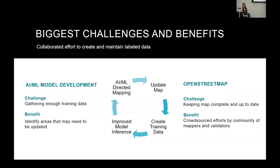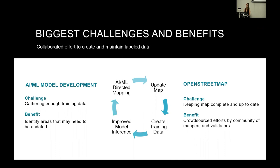One of the biggest challenges to developing an AI/ML model is gathering enough training data, and one of the biggest challenges for OpenStreetMap is keeping the map complete and up to date. There's a shared interest in creating and maintaining labeled data. Both can benefit if you're able to create training data from the map that's been updated by the community of mappers and validators, and that training data can be used to improve model inference, which can direct mapping and tell people where the map needs to be updated.